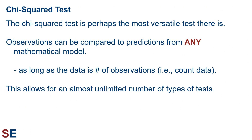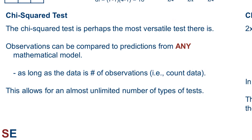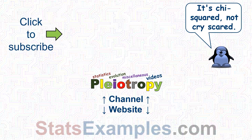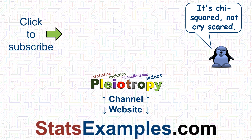The chi-squared test is perhaps the most versatile test there is. Observations can be compared to predictions from any mathematical model as long as the data can be expressed as count data. This allows for an almost unlimited number of types of tests. This test is often the one people go to when their data is unusual or their system is too complicated to be easily analyzed with a simple t-test or linear regression. There's a high-resolution PDF of this material on the Stats Examples website, which also has several videos of worked examples using this method with different scenarios — some goodness-of-fit tests and some tests of independence and homogeneity.